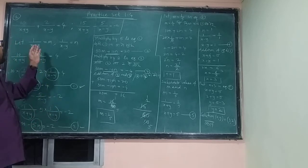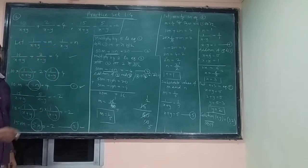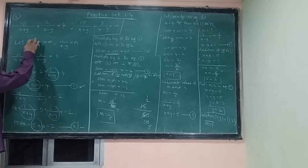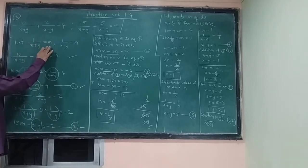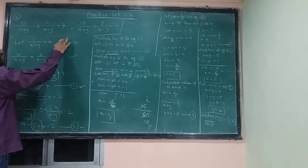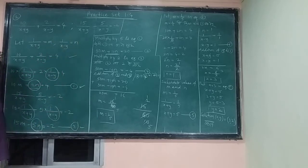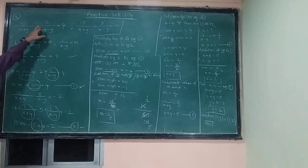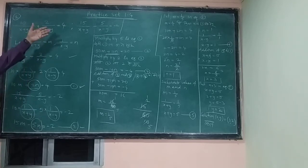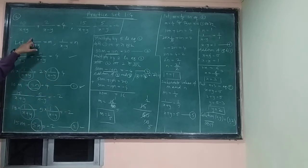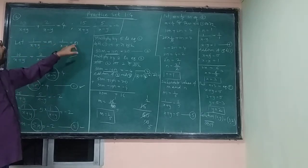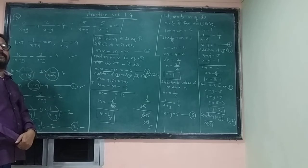That's why we have considered new variables for them. Let 1 upon (x + y) be equal to m, and 1 upon (x - y) be equal to n. Since the variables appear in the denominator, we consider separate variables. So 1 upon (x + y) = m and 1 upon (x - y) = n.